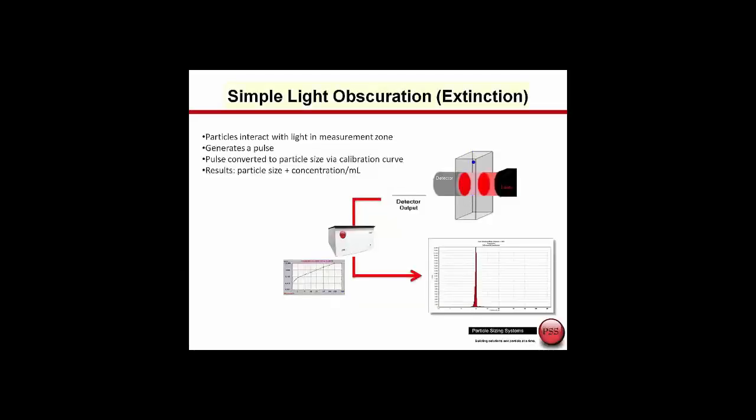This diagram shows the basic technology behind light obscuration or light extinction sensors. As a particle passes through a constricted flow in the measurement zone, the particle interacts with light and generates a pulse. This is fed through a pulse-side analyzer, which then uses a calibration curve to convert each pulse into a particle size, and one at a time we build the particle size distribution and also count the particles and report results in particle per milliliter.